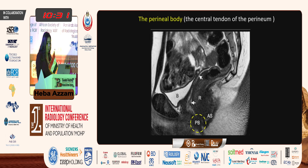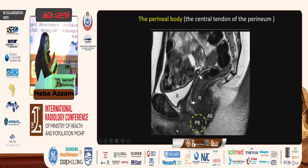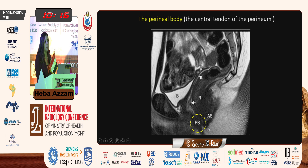The perineal body is a pyramidal-shaped, muscular fibrous structure situated between the vagina and the anus. It's also called the central tendon of the perineum, because it receives attachment from the puborectalis muscle, perineal muscles, and external anal sphincter.